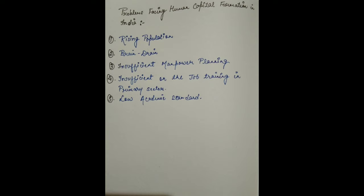Rising population: rapidly rising population adversely affects the quality of human capital. It reduces per head availability of the existing facilities that determine the quality of life and capacities to acquire knowledge and specialized skills. These facilities relate to housing, sanitation, drainage, water systems, hospitals, education, and electricity supply.